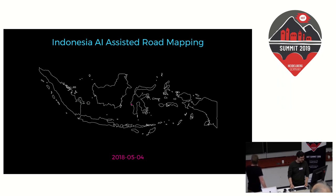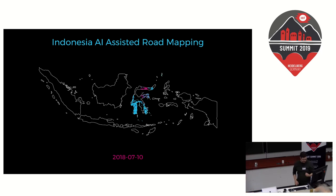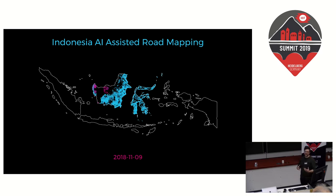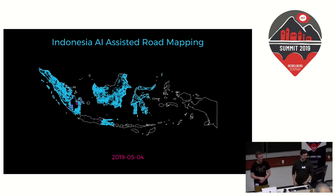After Thailand, we also began to work in Indonesia, and this shows over time how we've worked on filling in the road network using the AI-assisted methods there. Currently we're just over — it's almost entirely completed by the metric we use to measure. We're at like 99.96%, so it's really getting there.